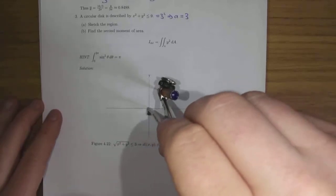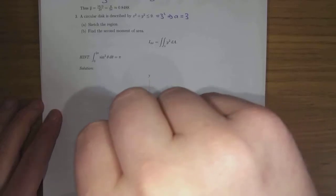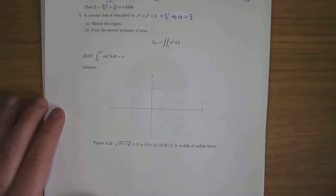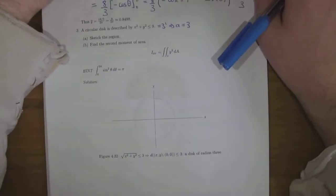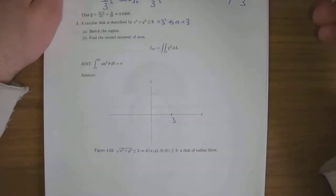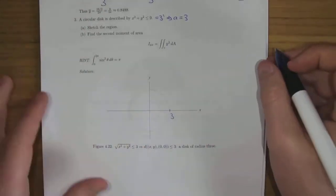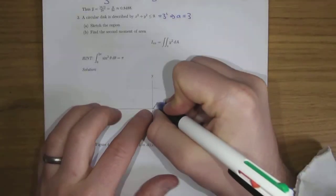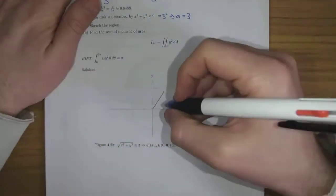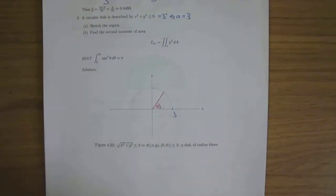The distance between any point in the disk and the origin is less than or equal to three. Squaring both sides gives x squared plus y squared less than or equal to nine. For the second moment of area, these are a little more natural. We're going to find the second moment of area of a spoke for a fixed angle θ.